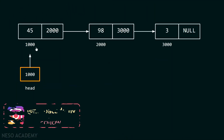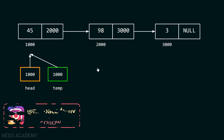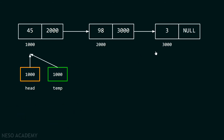Let us suppose we have this list already available with us, and we have a head pointer which is pointing to the first node of this list. I am going to create another pointer which will also point to the first node of this list, and I am going to use this pointer for traversing the list so that I can delete the last node.